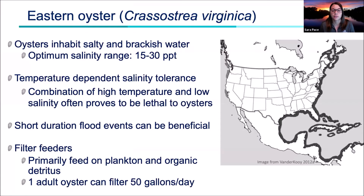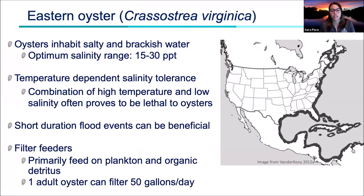These oysters have a range from Canada to the Gulf of Mexico, including the Caribbean islands, Central America, and parts of South America. They inhabit salty and brackish water, with an optimum salinity range of about 15 to 30 parts per thousand. Though oysters can tolerate salinities outside their normal range, their salinity tolerance is temperature dependent. In colder temperatures, oysters can survive low salinity for longer periods, but the combination of high temperature and low salinity is often lethal.